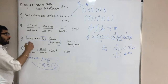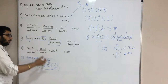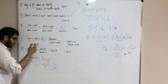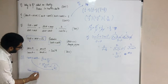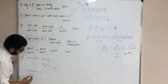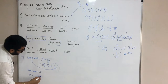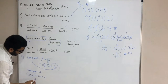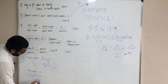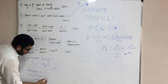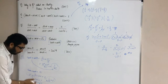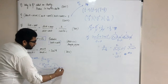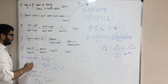You can write sine theta plus cos theta as root 2. When you square it, you get sine squared plus cos squared plus 2 sine cos equal to 2. So 1 plus 2 sine cos equals 2, meaning 2 sine cos equals 1, so sine cos equals 1/2. Therefore 1 by sine cos equals 2, and tan theta plus cot theta equals 2.